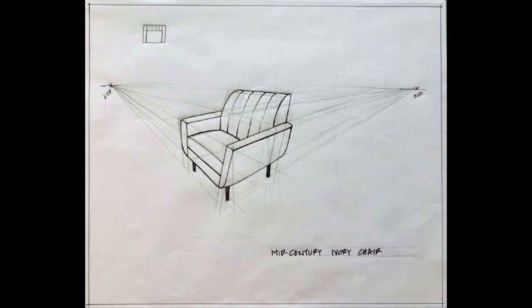Now it's difficult to see, but she's left in all of her analytical thoughts. She has lines for the angles on the chair, she has a big box that she started with, and it was all drawn freehand with her ballpoint pen, her plain ink ballpoint pen.